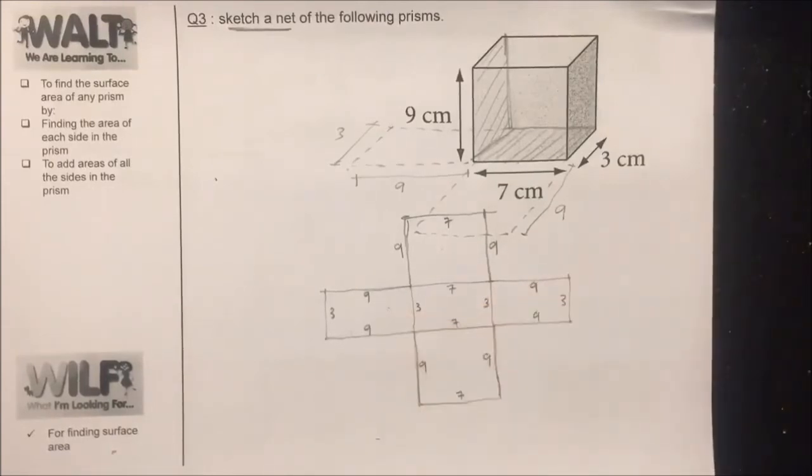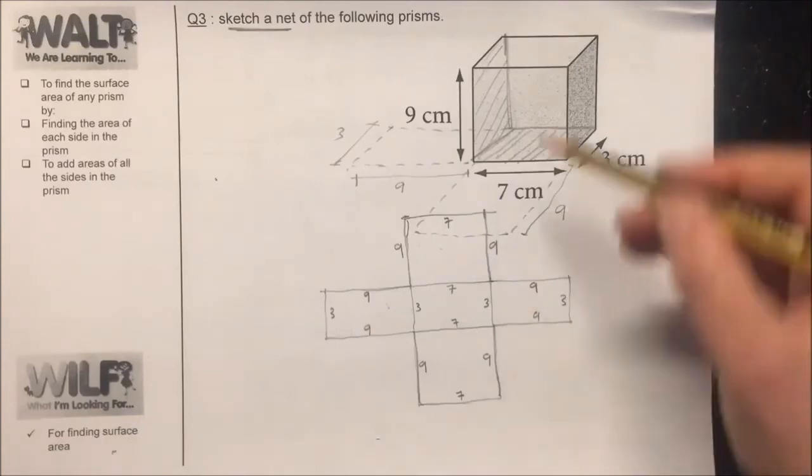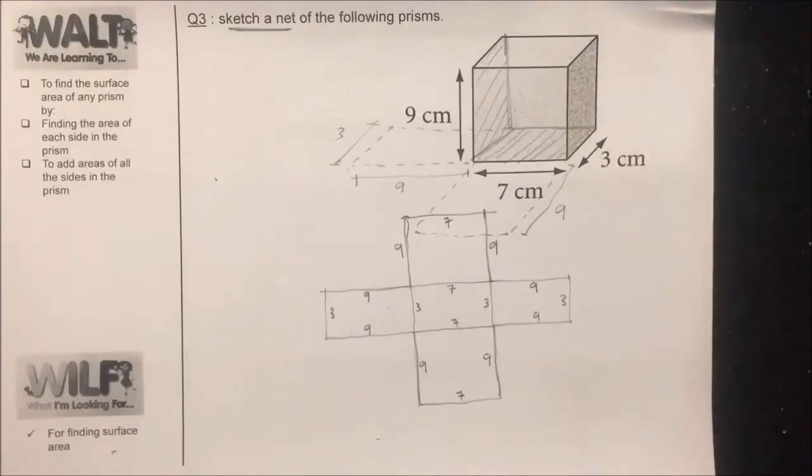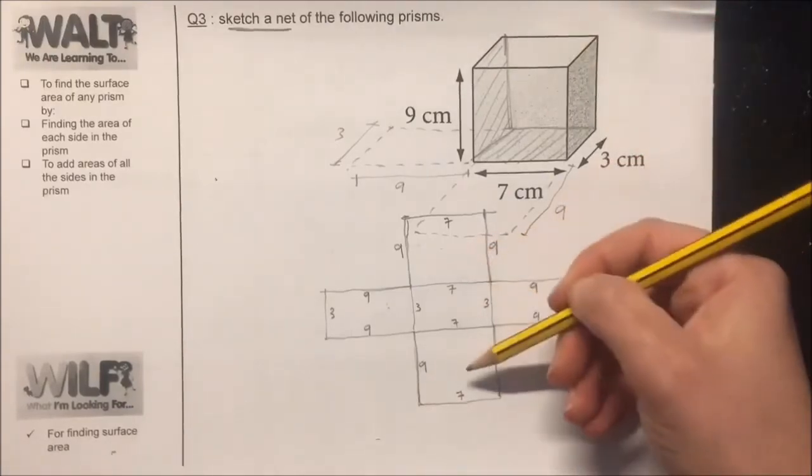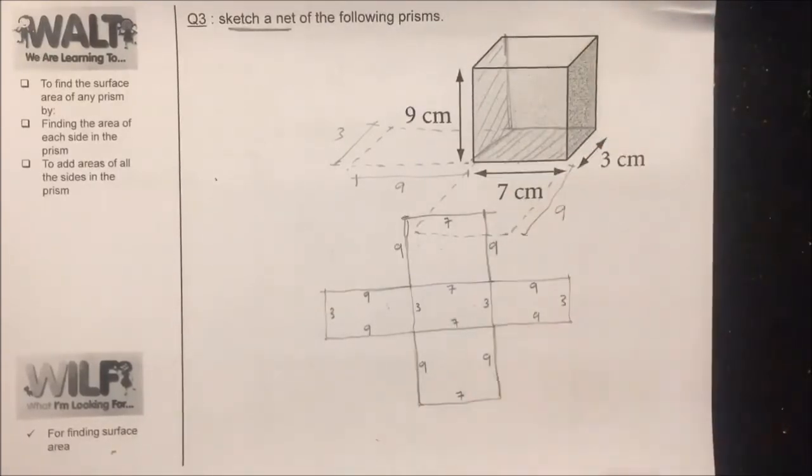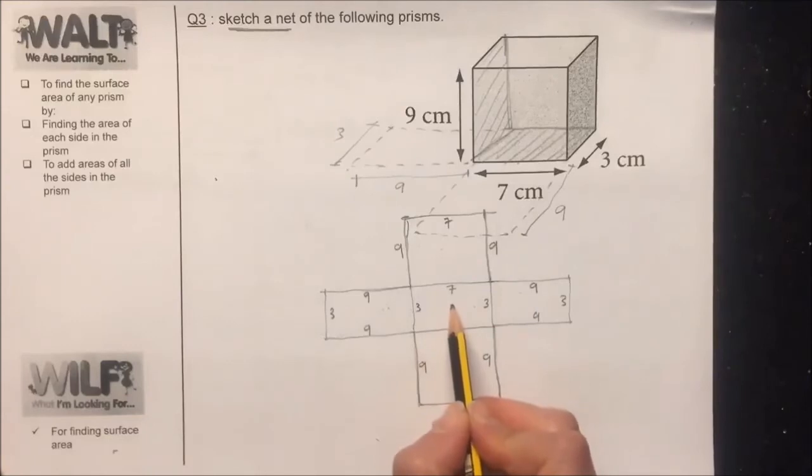Okay, so one, two, three, four, five faces. The sixth face, because a cuboid has six faces, is going to be the top. So front, back, floor, right and left side—the top is the exact same as the floor.